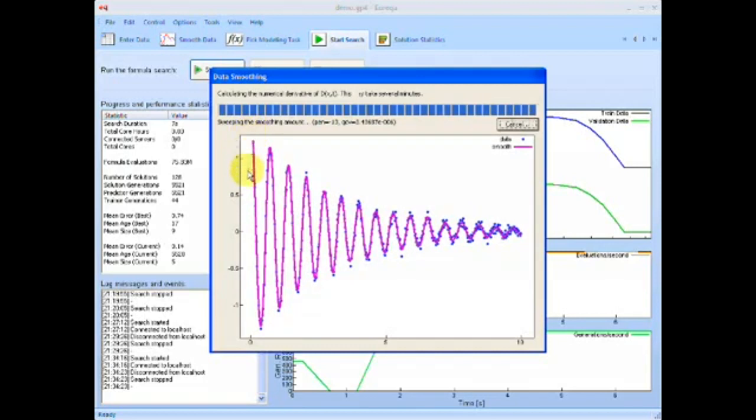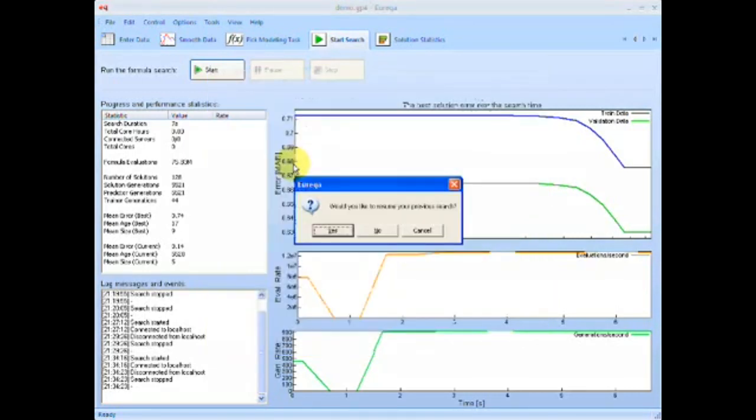To do this, it fits a spline curve and uses generalized cross-validation to pick a smooth of our data. And that smooth is used to estimate these derivatives and propagate a new data set for us to model.